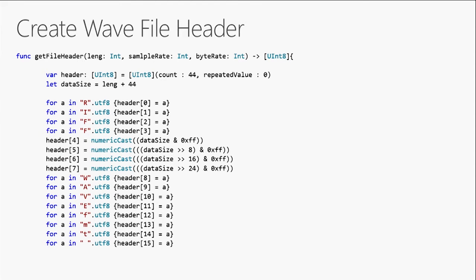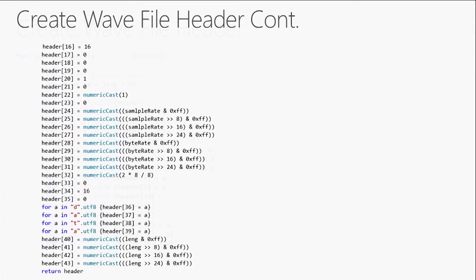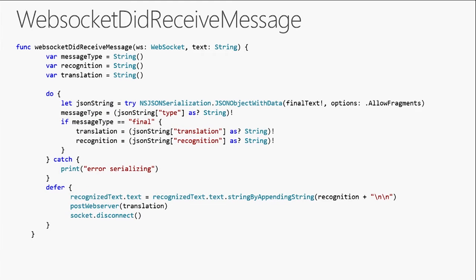This is what the header looks like — it's a WAV file header. It's really important to configure the header yourself to make sure you get it just the way the service wants it. We have the sample rate, the byte rate, the bit depth, the number of channels, and a variety of information. Once the header is right, the service can move forward.